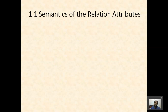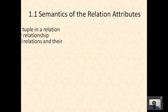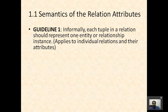The first guideline is about the semantics of the relation attributes. Informally, each tuple in a relation should represent one entity or relationship instance. This is an informal guideline — the formal design will be seen in the second session. These are some informal guidelines we should follow in our relations or tables.